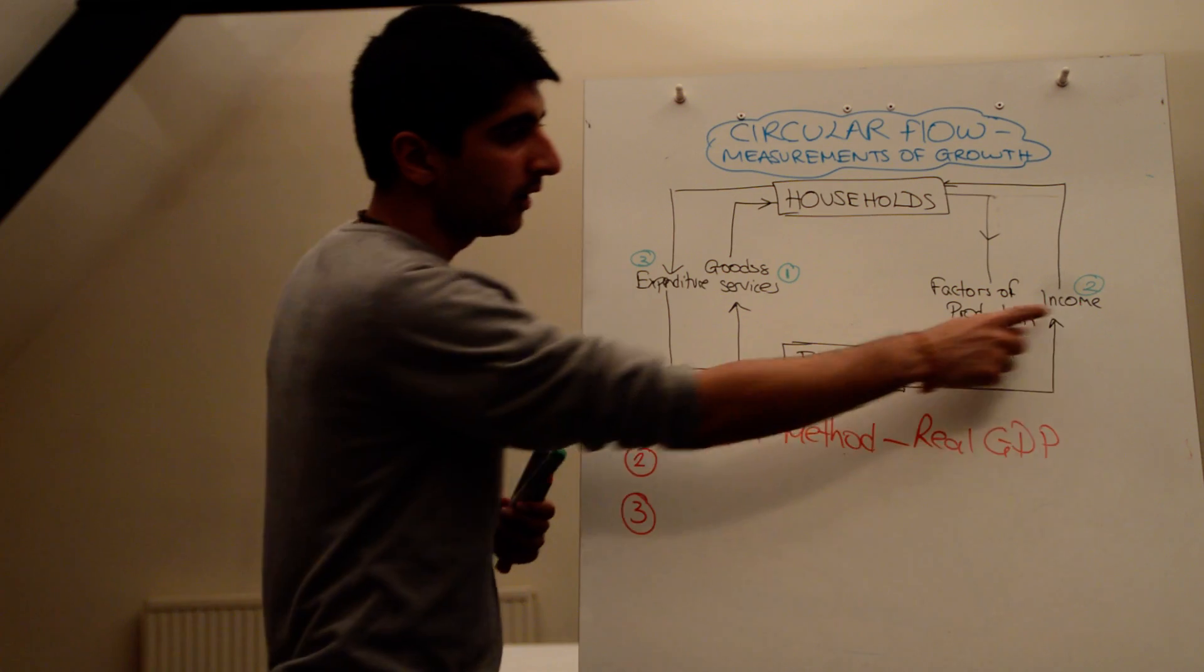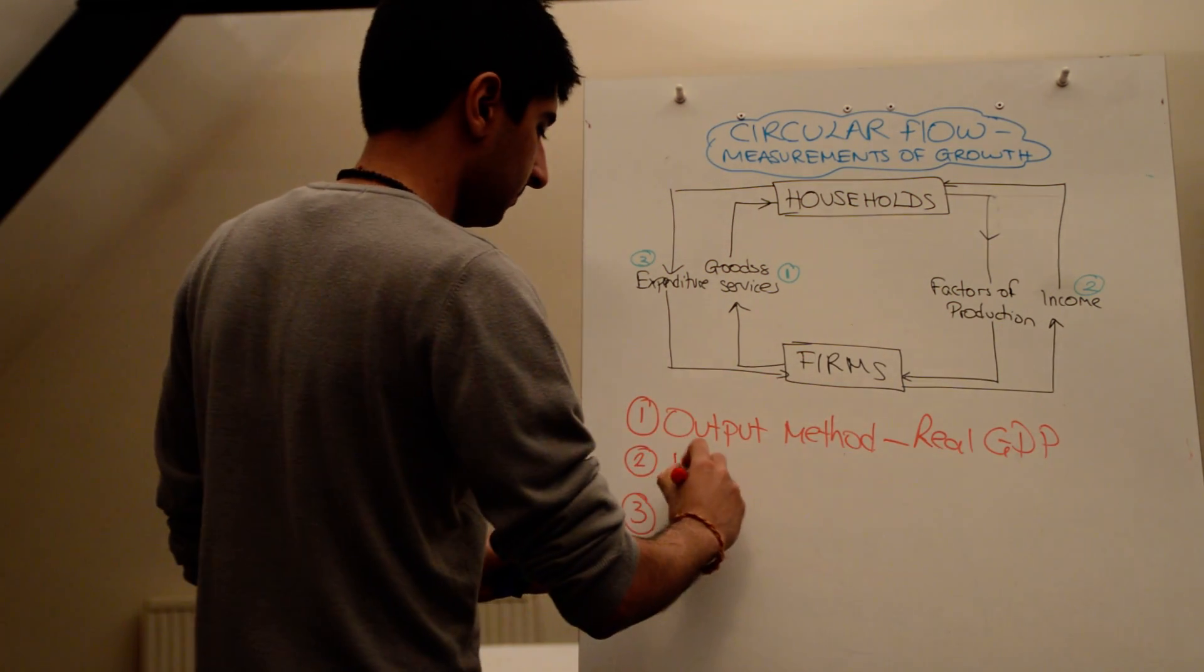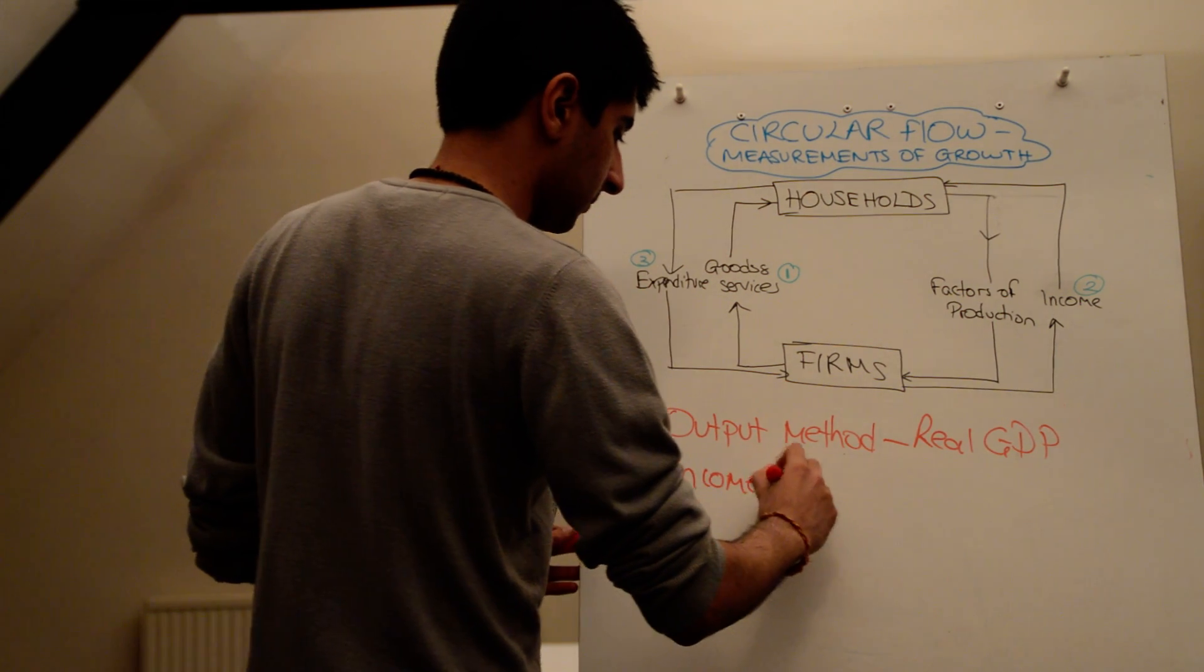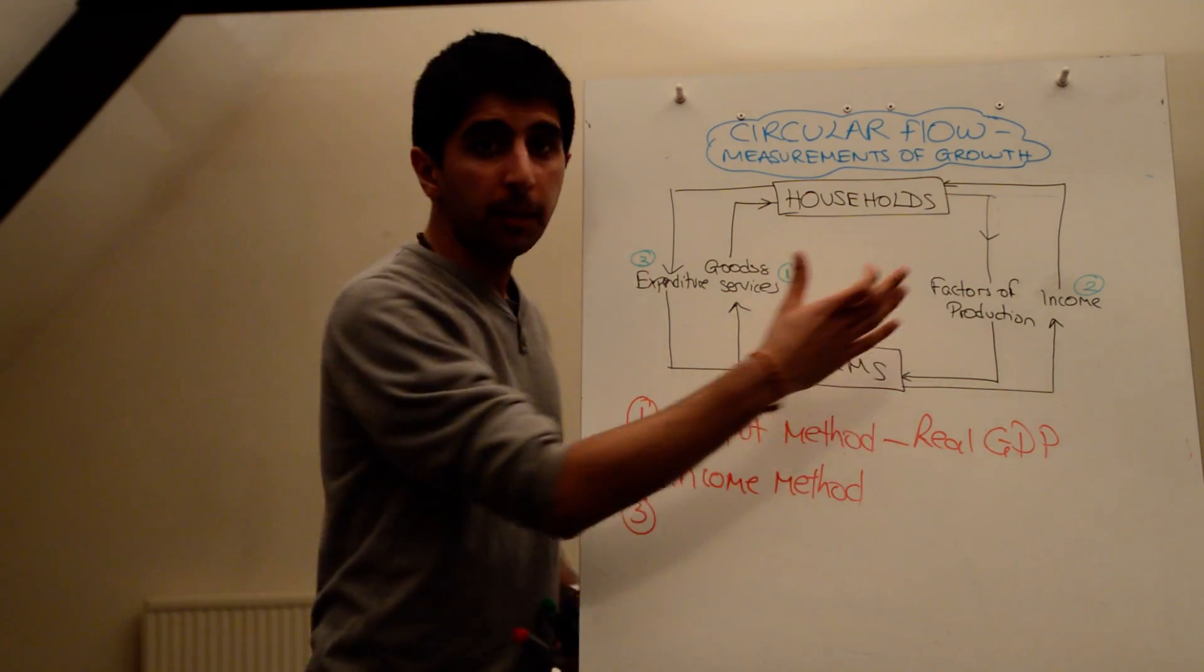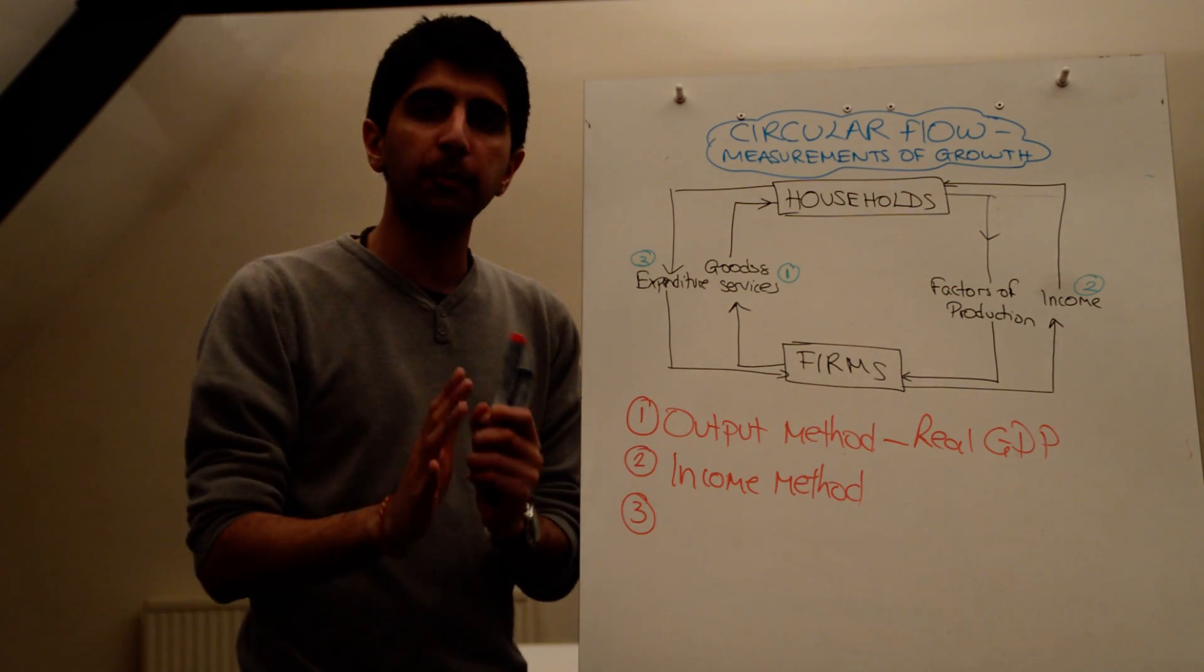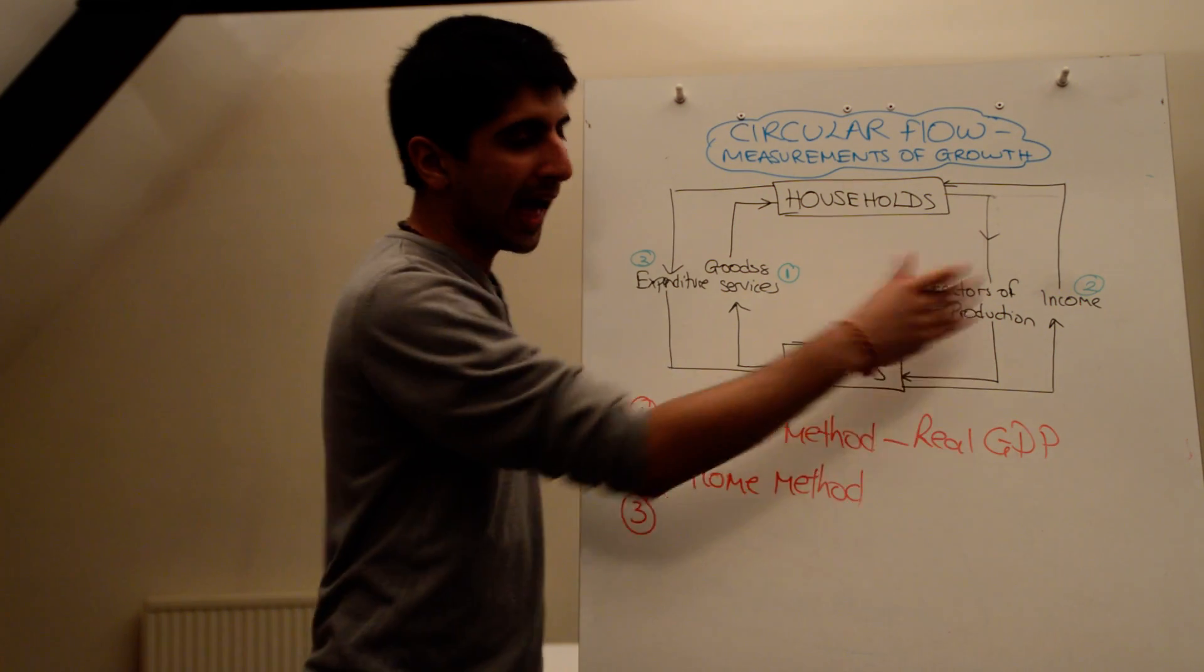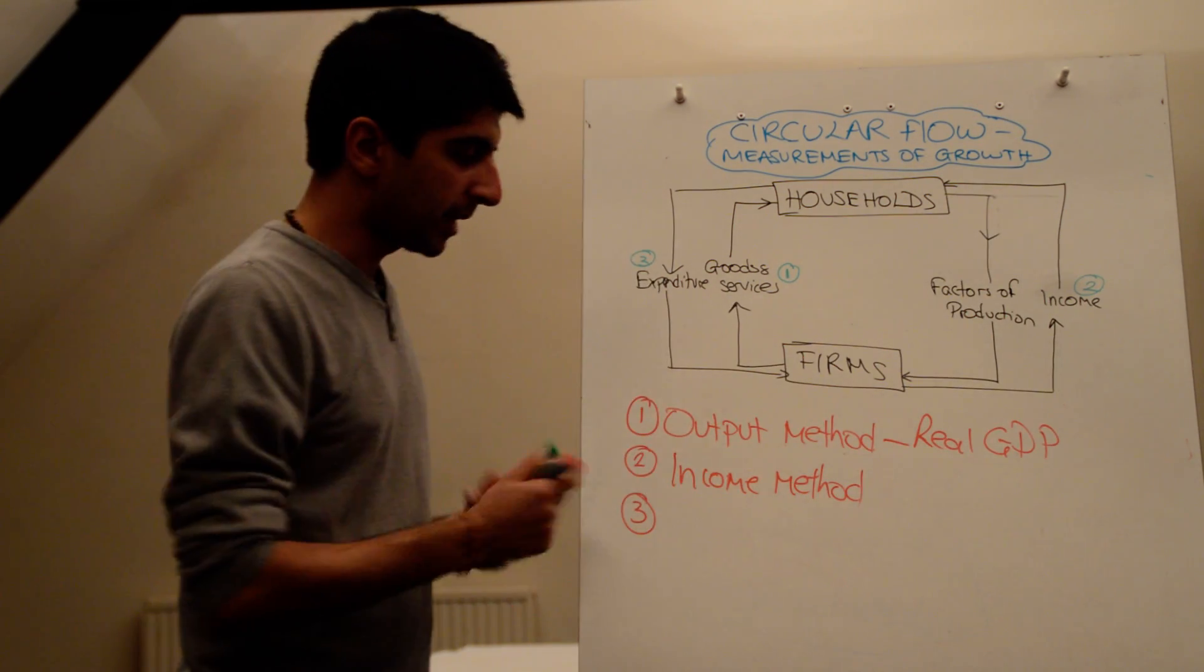You can also measure the total level of incomes in the economy. The income method. So if that's the incomes of firms, if that's the income of government, if that's the income of consumers, whatever, all the incomes made in the economy, add them all up and you get a measure of this part of the flow.